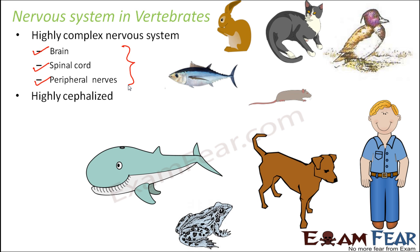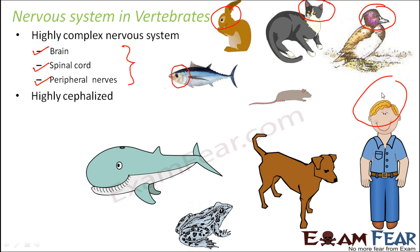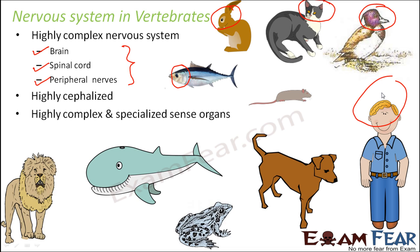In vertebrates, the system is also highly cephalized. You can distinguish a head region which has most of the sensory organs and nervous tissue. The nervous system is highly complex, and highly specialized sense organs are present in all of them.